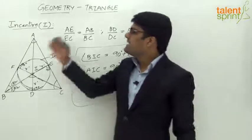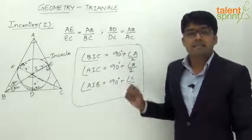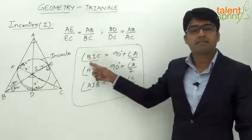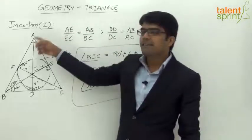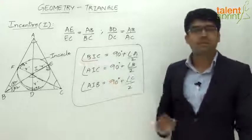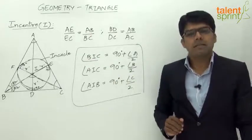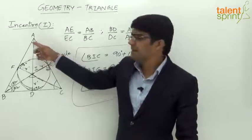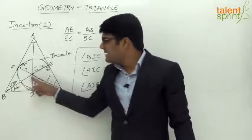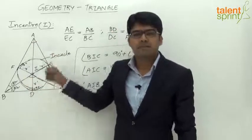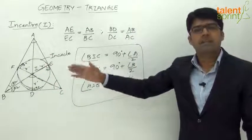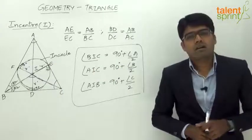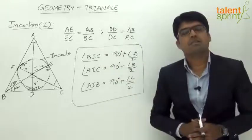For example, if angle A is 60°, the angle made by the opposite side BC with the incenter is 90° + half of 60° = 90° + 30° = 120°. If angle A is 30°, then angle BIC = 90° + half of 30° = 90° + 15° = 105°. This conclusion allows us to answer questions based on the incenter angle property in just 2 to 3 seconds.